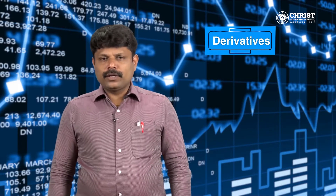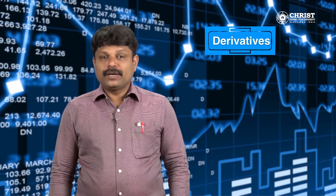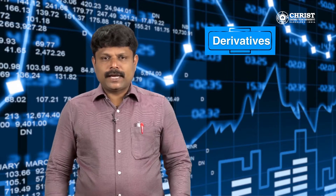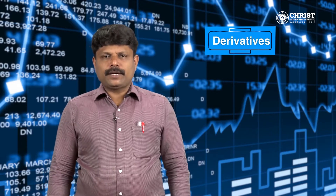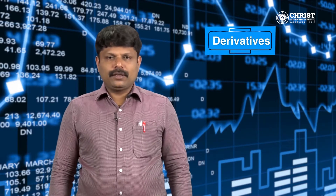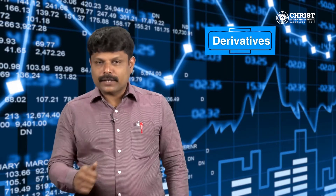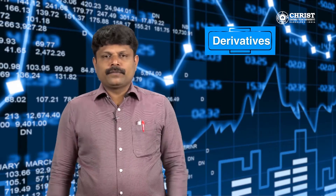For example, suppose the spot price of Reliance stock is rupees 580. Mr. X is planning to sell after three months. He is expecting the stock price to be less than 580 after three months, so he is entering a forward contract to sell at rupees 590 per share after three months.